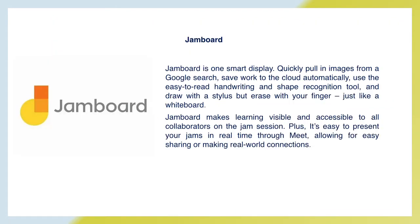The Jamboard is a smart display that can quickly pull images from a Google search, save work to the cloud automatically, use easy-to-read handwriting and shape recognition tools, and let you draw with your finger just like a whiteboard. Jamboard makes learning visible and accessible to all collaborators in a Jam session, and it's easy to present your Jamboard in real time, allowing for easy sharing and making real-world connections.